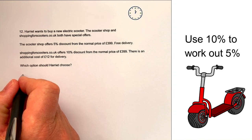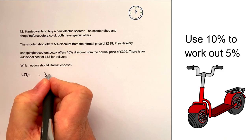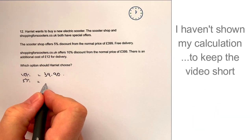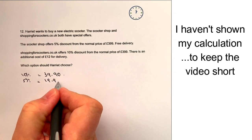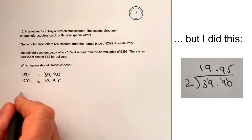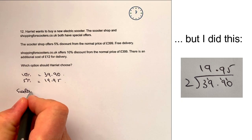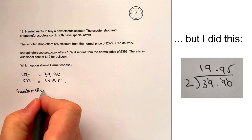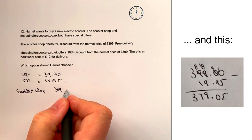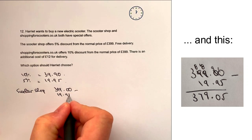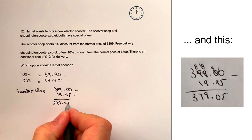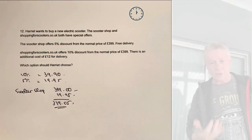10% of £399 is going to equal £39.90. So therefore 5% is going to be half of that, which is £19.95. Scooter Shop is going to be a discount of £19.95, which means the total price is going to be £399 minus £19.95. Taking one away from the other, I'm going to get £379.05, and that would be the cost from Scooter Shop.